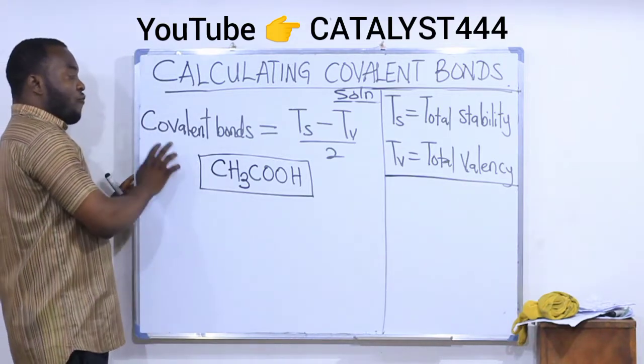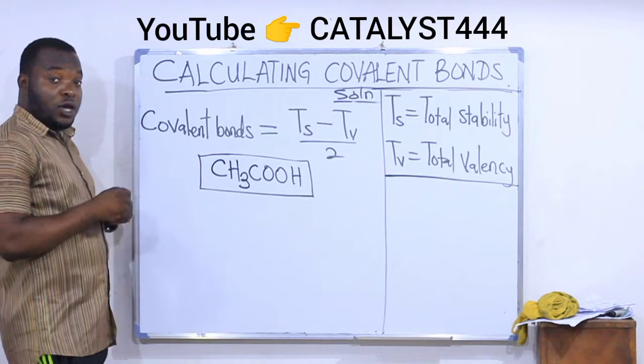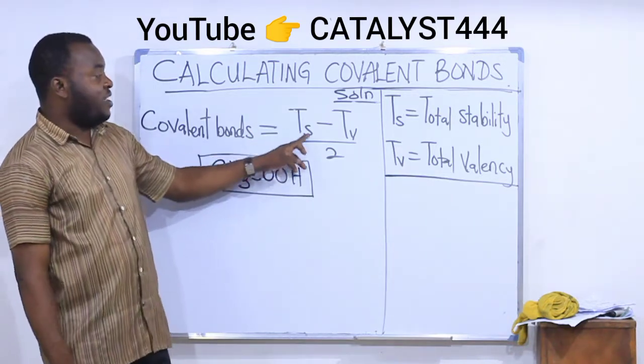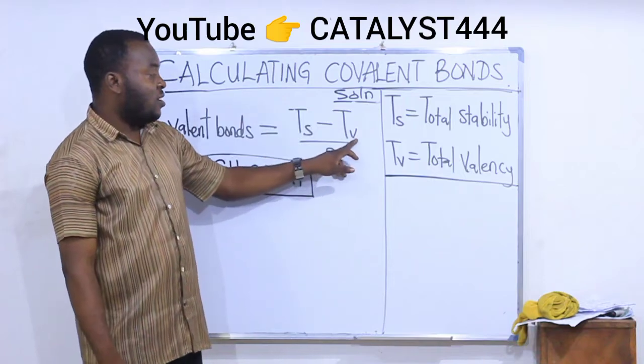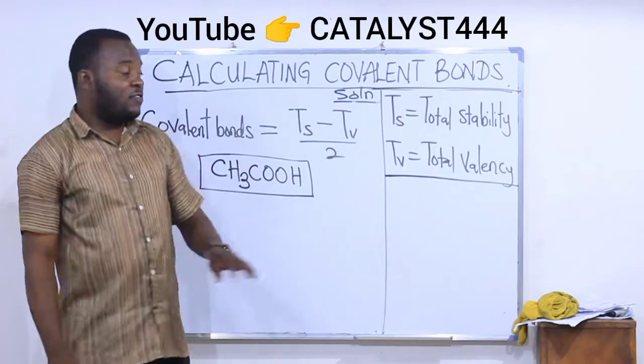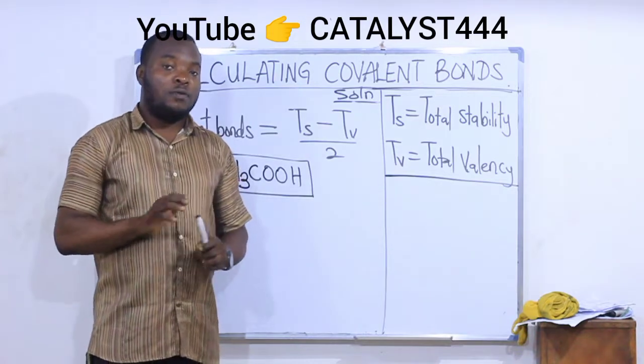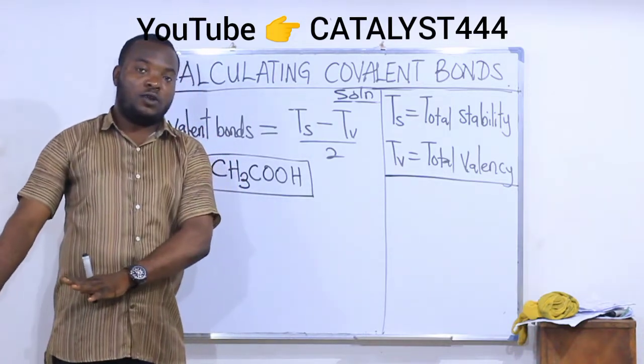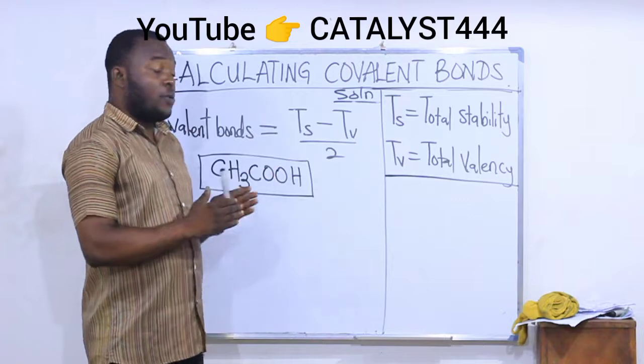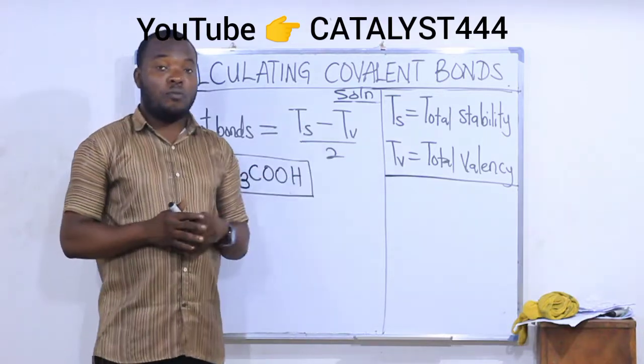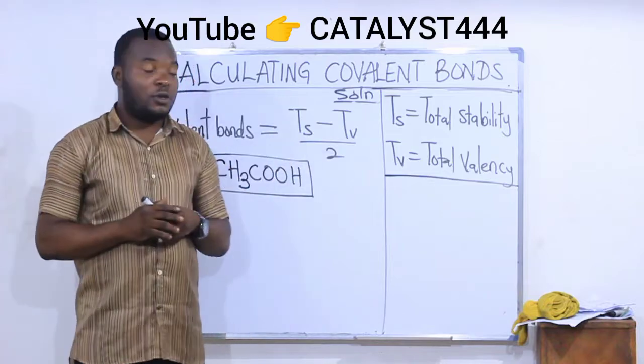The number of covalent bonds, as I have given you in previous videos, is calculated using the formula TS minus TV divided by 2. Please, when you use this formula and you get a decimal number, drop it, don't go ahead with it. The formula helps you only to understand. Make sure the answer you are getting is a whole number for you to go ahead with it.